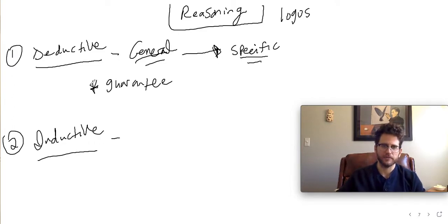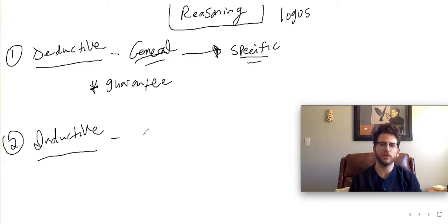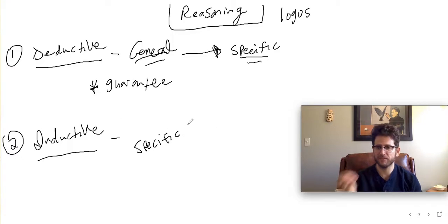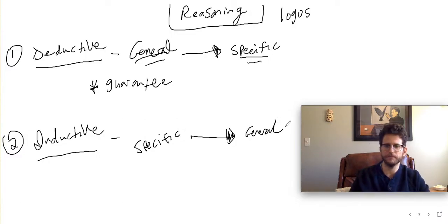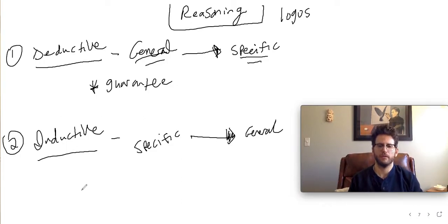Inductive arguments are kind of the reverse of deductive arguments. Inductive arguments start with something specific — many specific instances or cases — and then from those specific cases, hope to arrive at something general. So we start with the specific and arrive at the general.